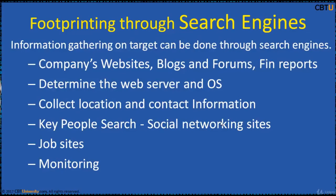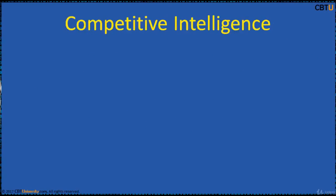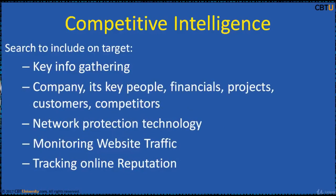Footprinting through search engines can gather a lot of information, such as: exploring company public and intranet websites, blogs and forums, financial reports, finding hosting, web server and operating system details, collecting location and contact information with key people search, social networking sites, gathering information from financial services, footprinting through job sites, monitoring targets using alerts, and competitive intelligence — including target key intelligence info gathering on the company, its key people, financials, projects, customers, competitors, network protection technology being used, monitoring website traffic, and tracking online reputation.